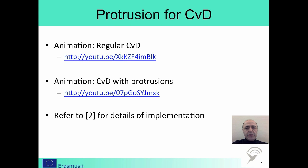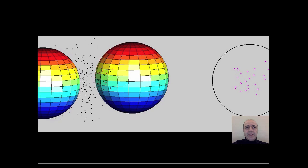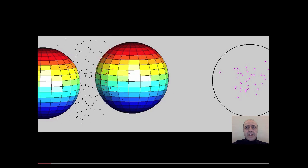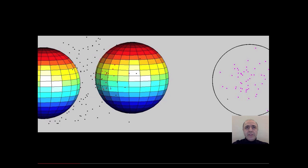Let's have a look at the animations provided by my PhD student Gaia Gench. The first video shows regular CVD when there are no protrusions. The sphere on the left is a transmitter and the sphere to the right is the receiver. At the very right end, you see a circle which represents the face of the receiver that faces towards the transmitter. The messenger molecules are released from the transmitter, and when they hit the receiver, they are shown with red dots. In the circle at the very right end, you see the number of received molecules increasing in time.